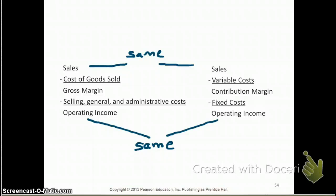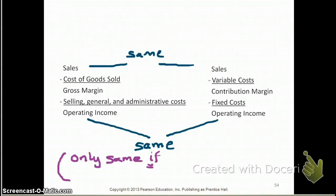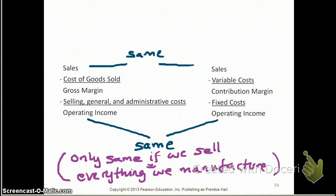I should mention that the operating incomes are not always going to be the same. If you go on to managerial or cost accounting at a higher level, you need to know that the two operating incomes are only equal if you've sold everything you manufactured. If you have ending inventory — meaning cost of goods manufactured differs from cost of goods sold — you'll need to do a reconciliation. For the purpose of this class, we'll say operating incomes are the same. Be sure to be very familiar with the contribution margin income statement, as we'll be using it a lot in the next few chapters.